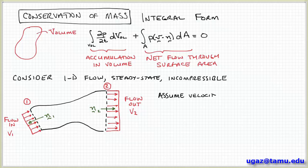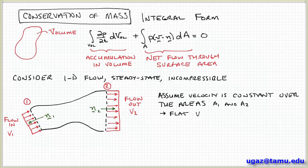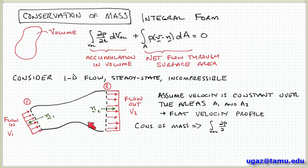Okay, so again, we're assuming that the velocity is constant over the cross-sectional area. So that's what I've shown here. I've tried to denote the velocity profile as flat.